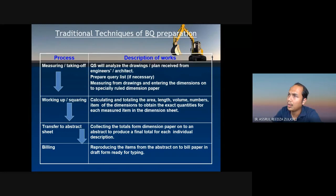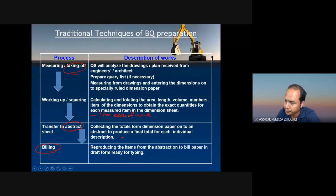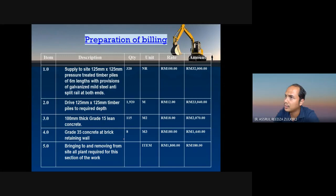The traditional techniques in BQ preparation — previously I mentioned how to prepare the bill of quantity. They start with taking off, then do all the calculations for each item of work, and then you need to do the abstracting. Abstracting is to put every work item, classify each work according to its respective category. That is abstracting, and then the process of billing and producing a BQ.